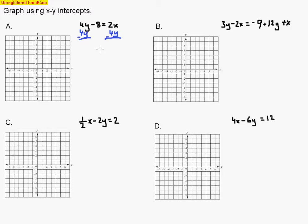Now I've got negative 8 equals 2x minus 4y. I'm going to find the x-intercept and the y-intercept. To find the x-intercept, remember it's on the x-axis. What is the value of y when you're on the x-axis? You stay right where you're at — the value of y is zero. So we set y equal to zero, which cancels out the y term, leaving negative 8 equals 2x. Dividing by 2 gives x equals negative 4.